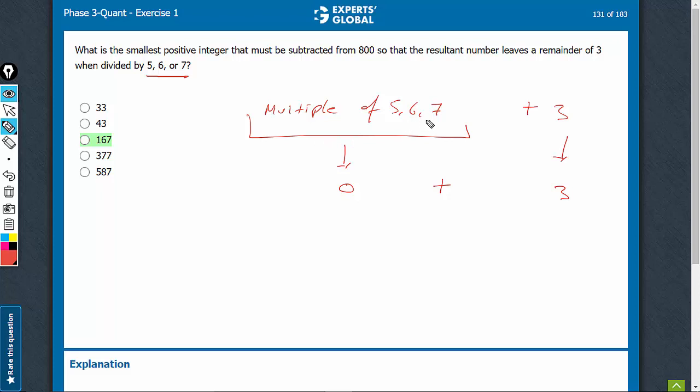The smallest multiple of 5, 6, 7 is the LCM of 5, 6, 7. That would be 210.